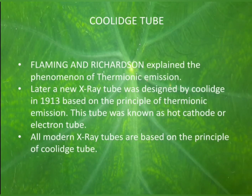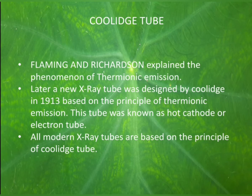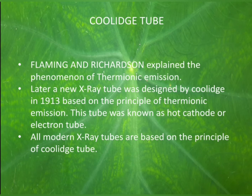Now let's see the second type — the Coolidge tube. The Coolidge tube is based on the principle of thermionic emission. The phenomenon of thermionic emission was first explained by Fleming and Richardson. Later, a new x-ray tube based on the thermionic emission principle was designed by a scientist known as Coolidge in the year 1913. In honor of this scientist, the tube was named the Coolidge tube.